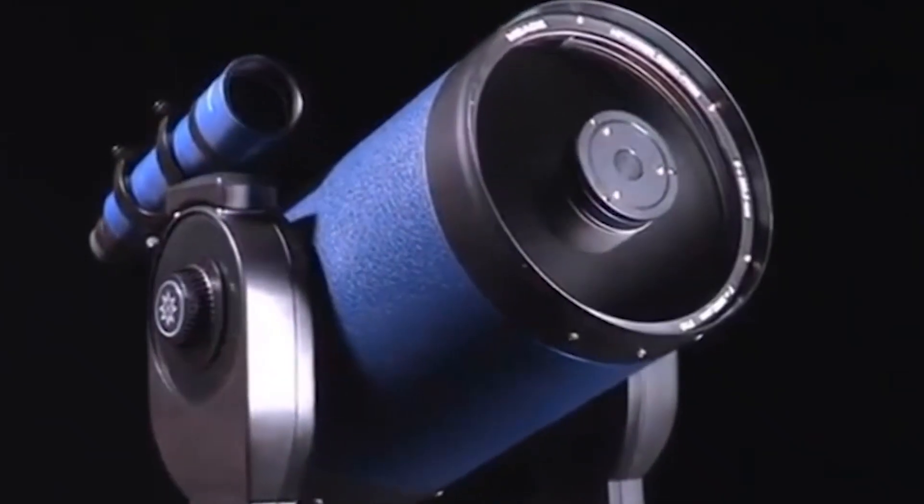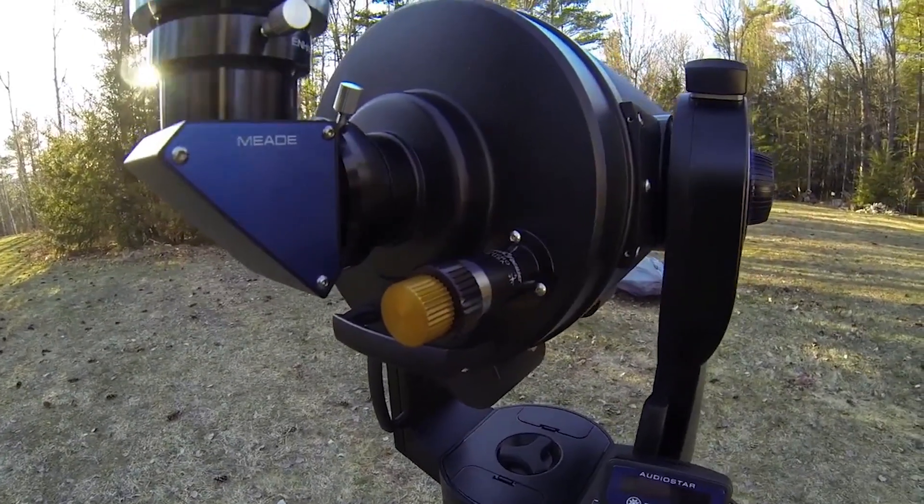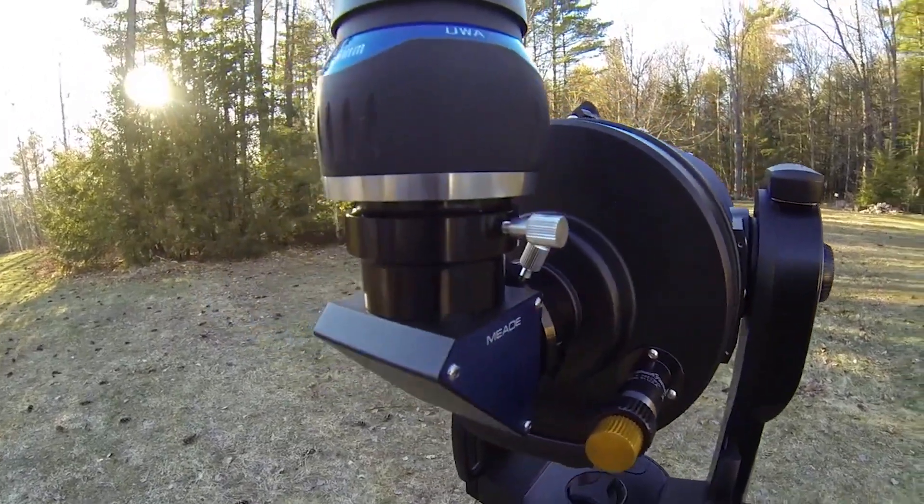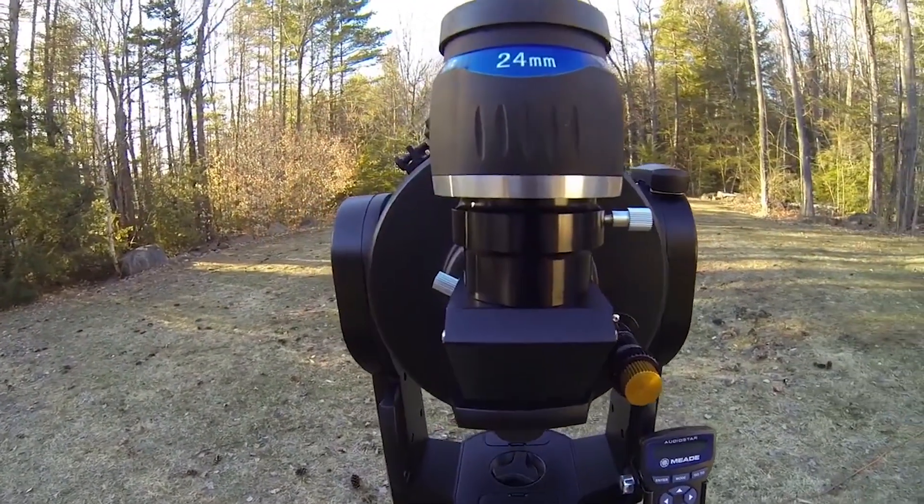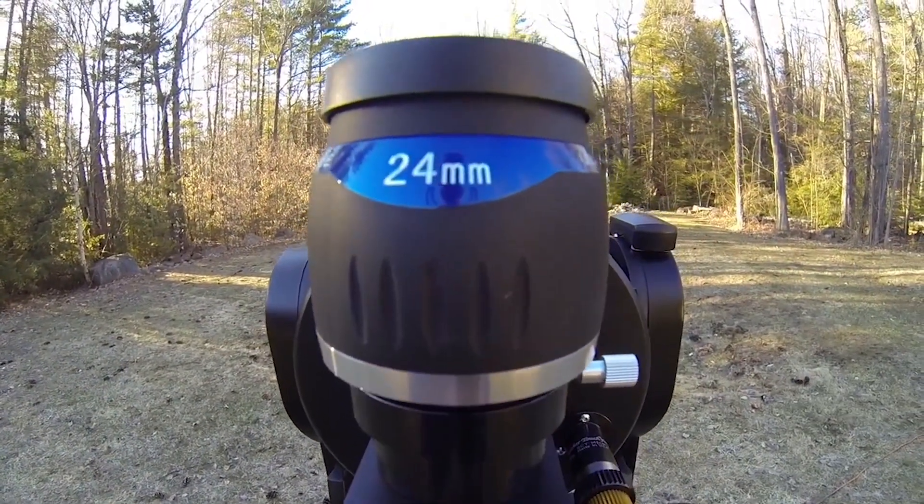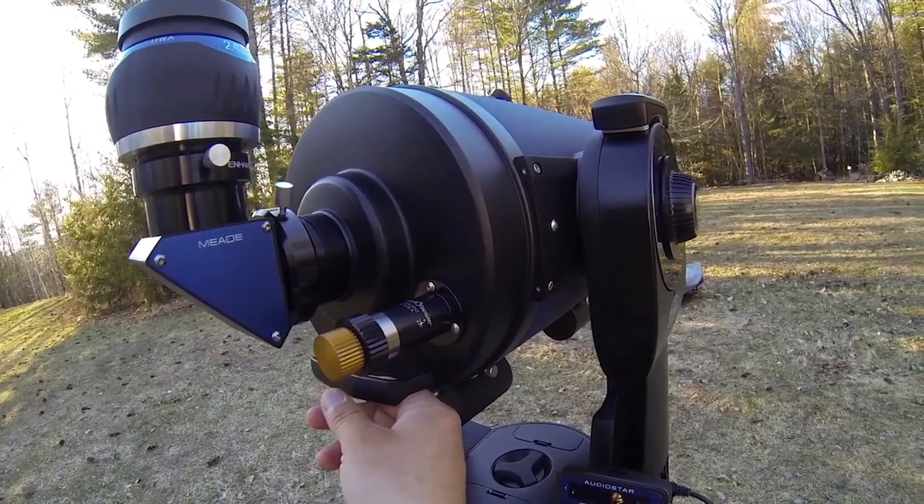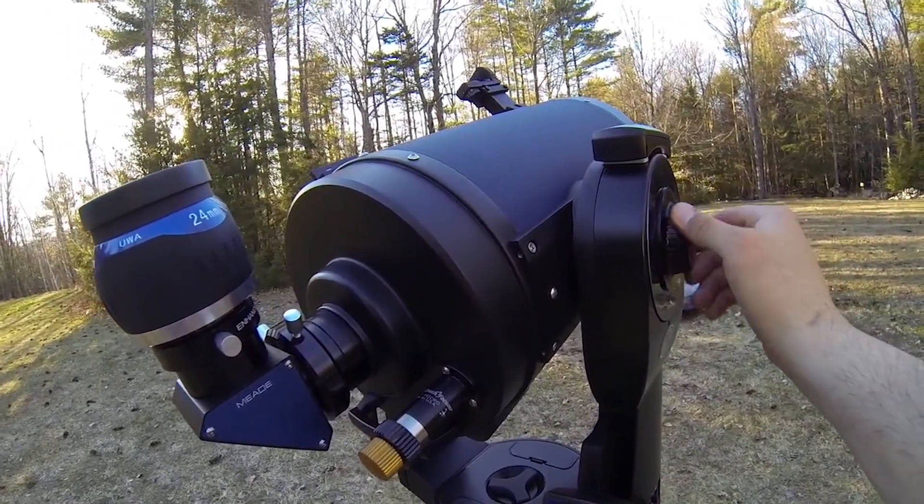1. Meade LX90 ACF. This high-end telescope has built-in Sony GPS sensor, which determines your precise location and means that it can find more than 30,000 stars, planets, nebulae, comets, and galaxies for you super fast.